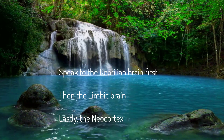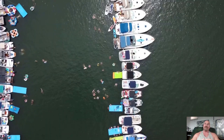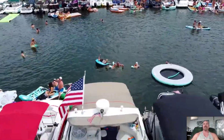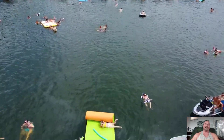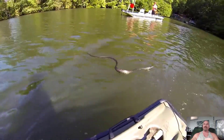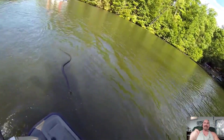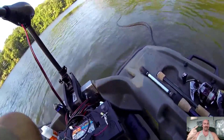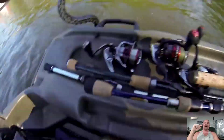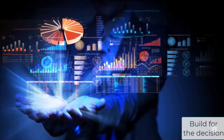This brain can make survival decisions before you or the other brains can even begin to process the data. I know this firsthand — we were out at the lake, I was floating on a raft talking with friends and family. I felt something brush my leg, and before I could look, I had reached down, grabbed, and thrown a four-foot water snake at least 30 feet across the water. I literally grabbed and threw a snake before my neocortex could even register there was a snake on my lap. That's the reptilian brain.